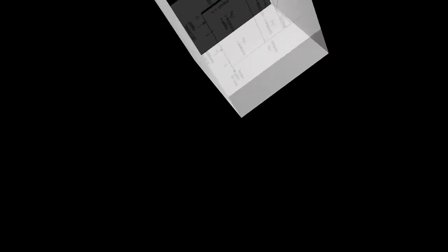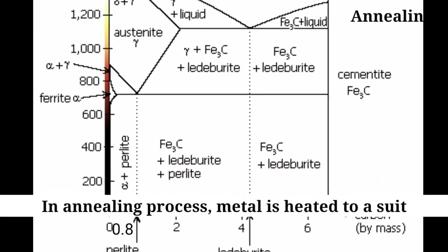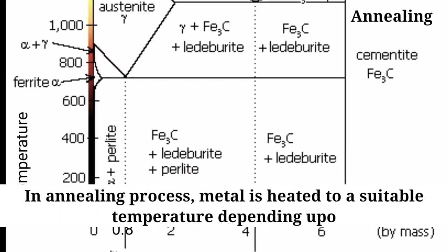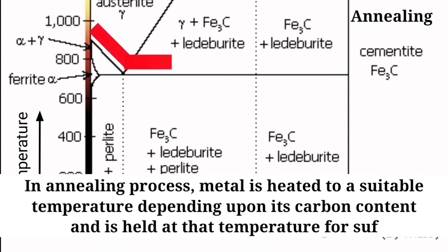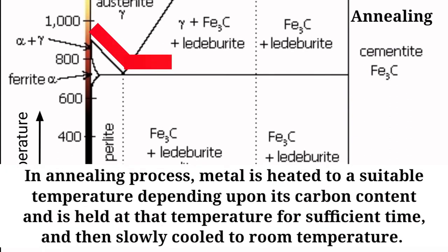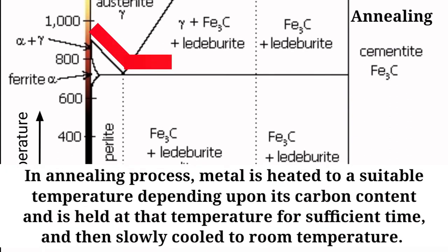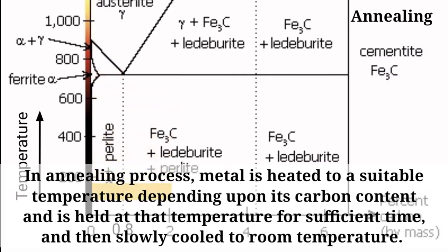Let us discuss about annealing. In the annealing process, the metal is heated to a suitable temperature depending upon its carbon content, and is held at that temperature for sufficient time, and then slowly cooled to room temperature.